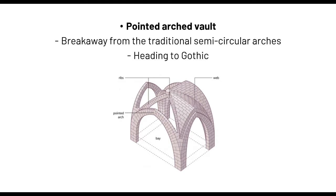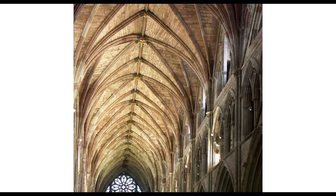The last kind of vaulting system is actually more associated with the Gothic era but is also linked with Romanesque because it was developed — though not fully — during the Romanesque period. The pointed arched vault is a breakaway from the traditional semi-circular arches. Pointed arches are mostly linked with Gothic churches. In real-life application, a pointed arched vault looks very similar to the rib vault — however, its arch is pointed rather than semi-circular.